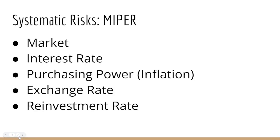Systematic risks — I like to remember them by the acronym MIPER. That's market risk, interest rate risk, purchasing power risk (otherwise known as inflation), exchange rate risk, and reinvestment rate risk. Whenever you're investing, you are subject to these five major systematic risks.